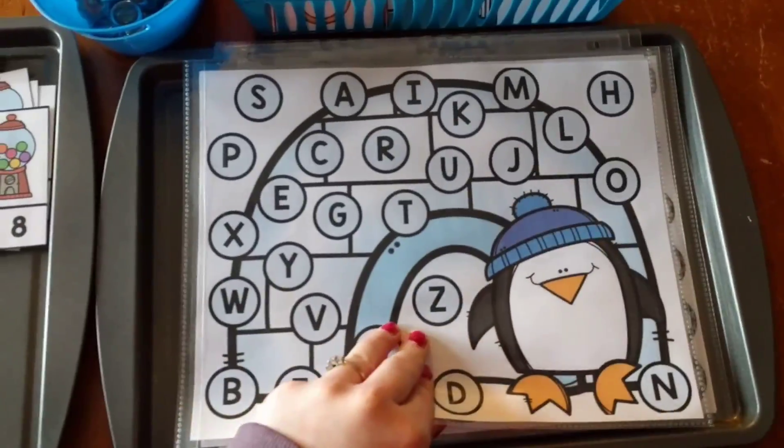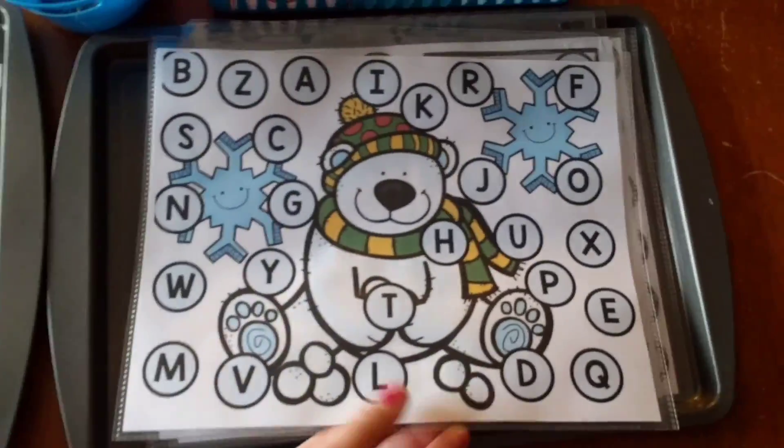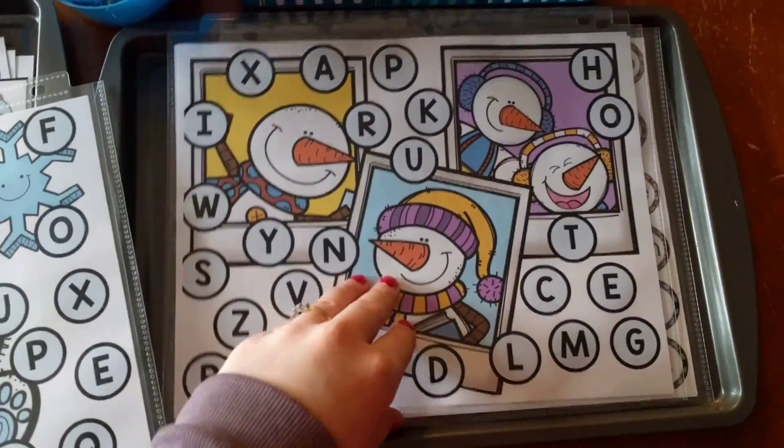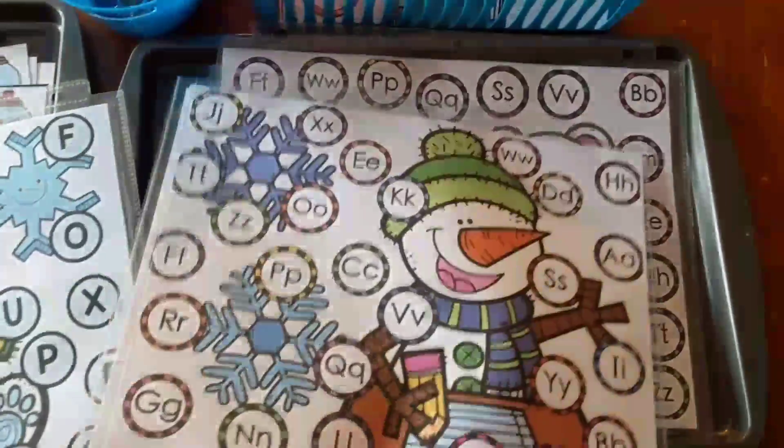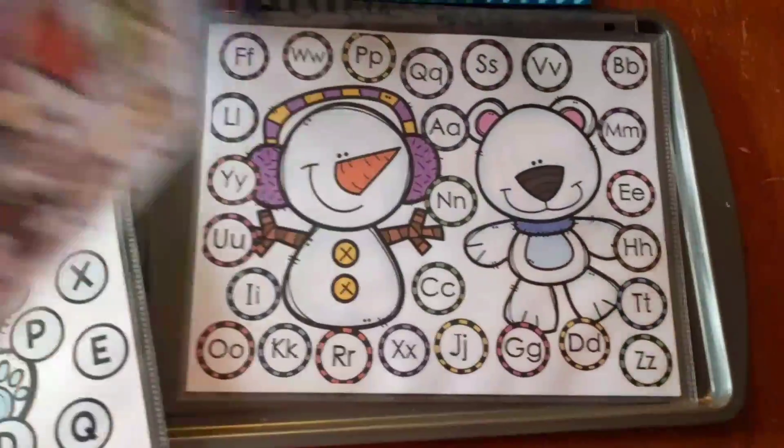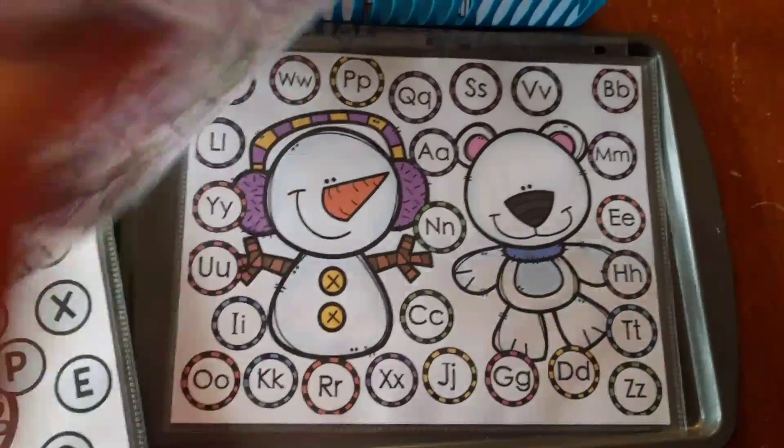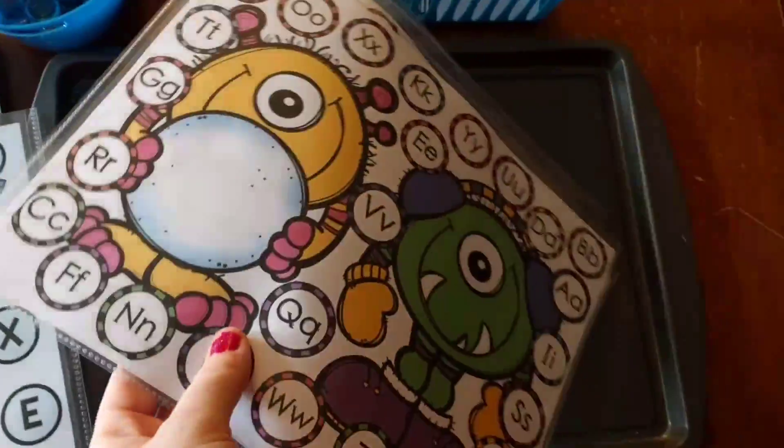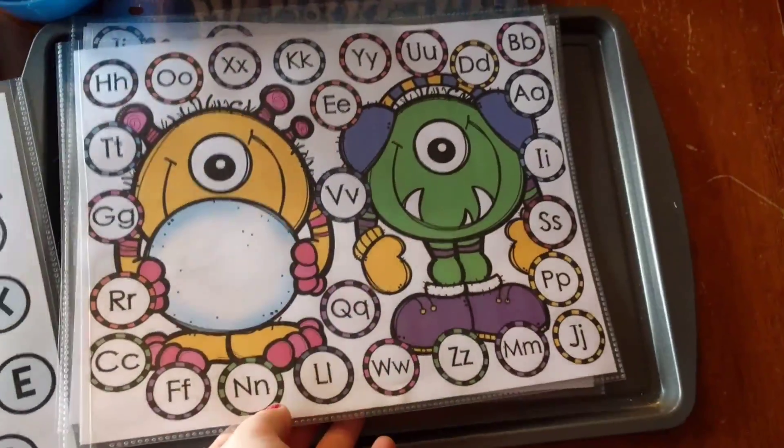So here you can see I have just a penguin, there's a little winter polar bear, some winter snowmen, another one with a snowman, snowman, and a little bear, and then what is the other one? Little monsters with snow.